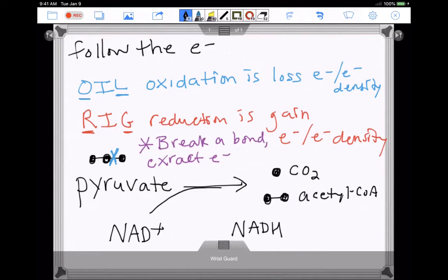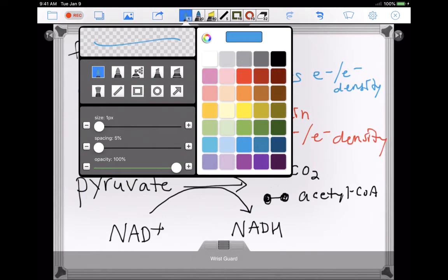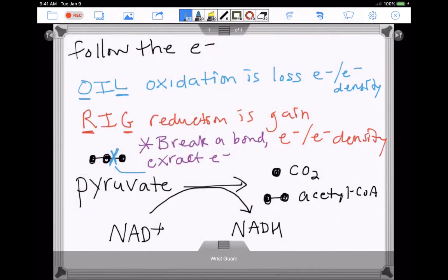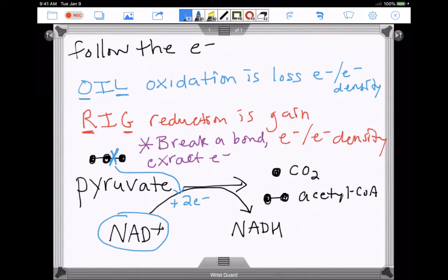In the case of the oxidation of pyruvate, the molecule that the electrons are transferred into - the electrons come out of the bond, you can think of it that way, two at a time. The NAD+ gains those two electrons and is turned into NADH.